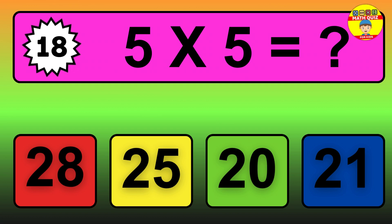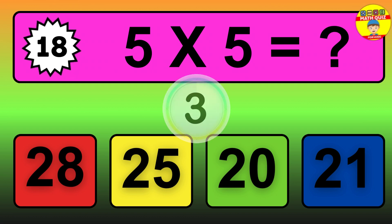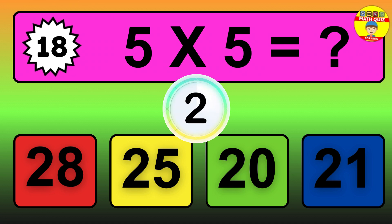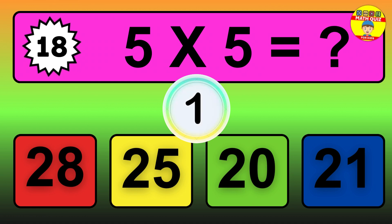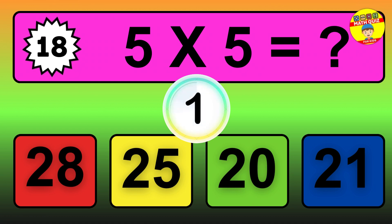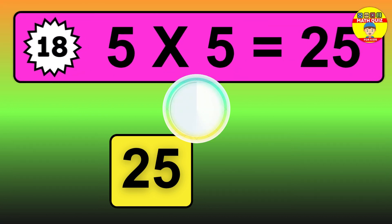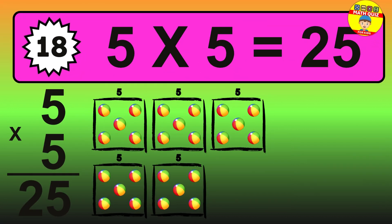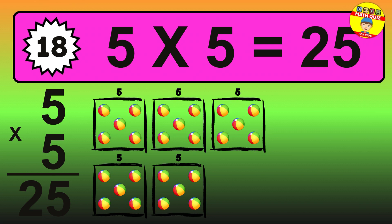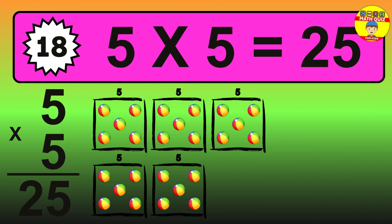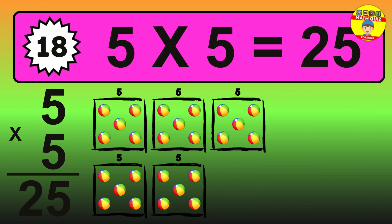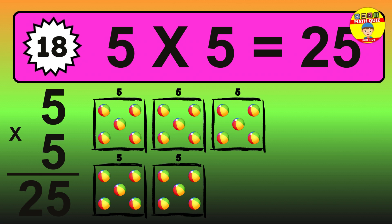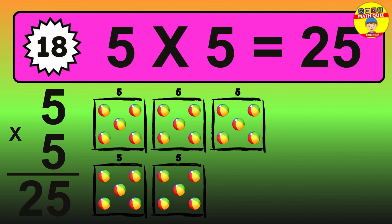Question 18. 5 times 5 equals what? The answer is 5 times 5 is 25. To calculate, we have 5 groups with 5 balls each one. So, how many balls do we have? 25 balls.